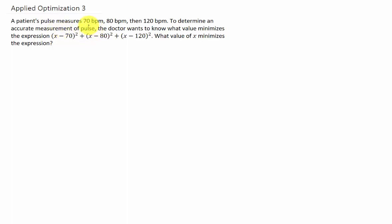A patient's pulse measures 70 beats per minute, 80 beats per minute, then 120 beats per minute. The doctor is trying to use this formula here to determine an accurate measurement of their pulse.